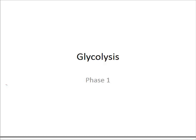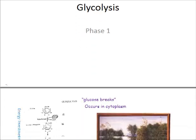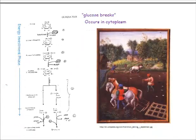The first phase of cellular respiration, whether it's aerobic or anaerobic, is glycolysis. This is actually an anaerobic process — it requires no oxygen. Glycolysis literally means glucose breaks, and it occurs in the cytoplasm of all cells. Some cells, like prokaryotic cells such as bacteria, don't have anything but cytoplasm. In aerobic cellular respiration, everything except glycolysis occurs at the mitochondria.